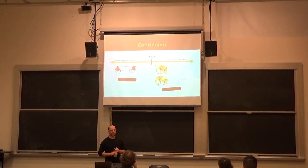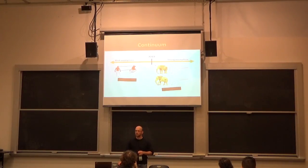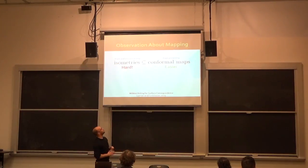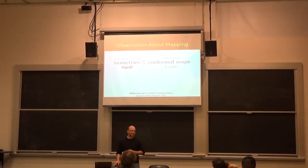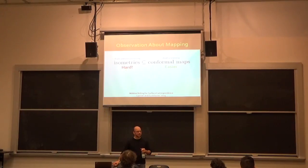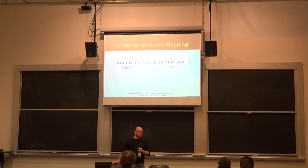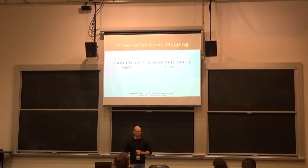A totally reasonable thing to say is: if I can't preserve both lengths and angles, maybe I'll just preserve one. In particular, the mathematics of angle preservation is really elegant — this is the area called conformal geometry. Incidentally, it's only elegant for two-dimensional objects. If you want a conformal map of a volume, that's much harder. Because conformal geometry links cleanly into the theory of complex numbers, two-dimensional conformal geometry specifically is quite elegant — this is the idea of a Riemann map.